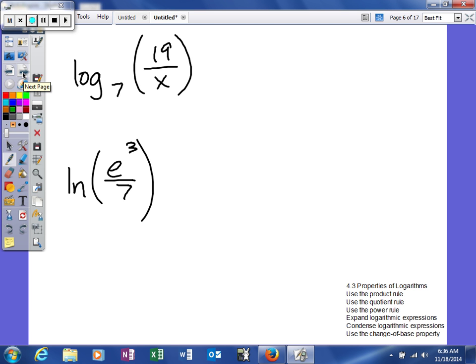So log base 7 of 19 divided by x. So what we'll get is we'll get the log base 7 of 19, and then minus the log base 7 of x. We can't simplify either of these. 7 to some power will give us 19. We don't know what that's going to be. It's not an integer or a rational number, and since we're doing x there, we can't simplify it.